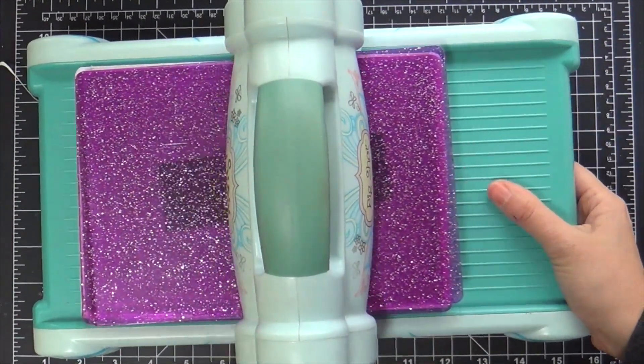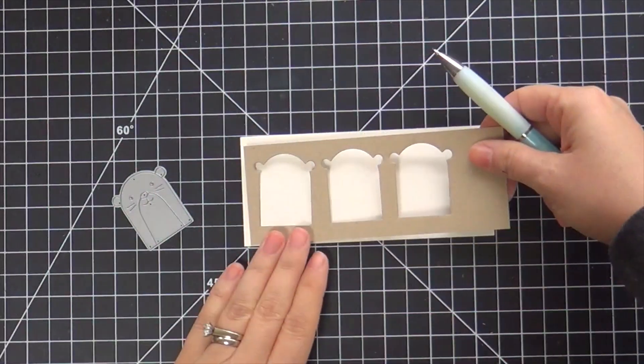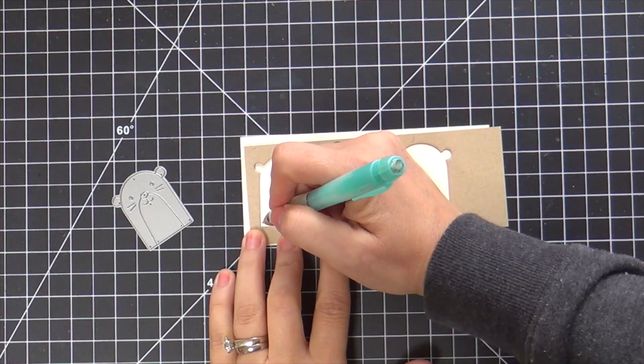So what I'm doing here is die cutting with solid color cardstock all the little pieces of the otter. So black for the nose and the eyes and so on.